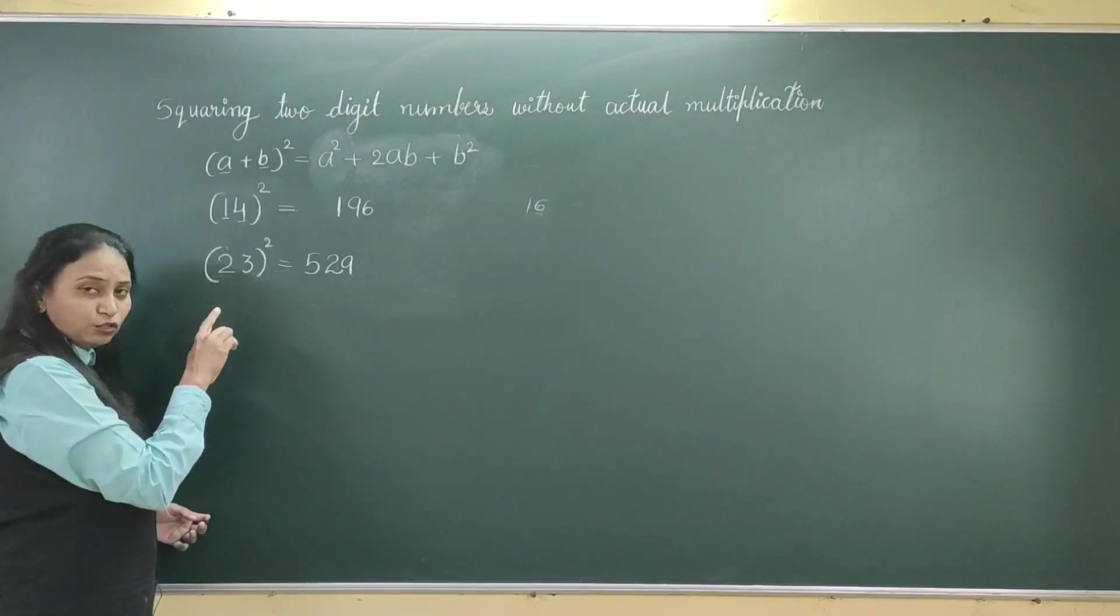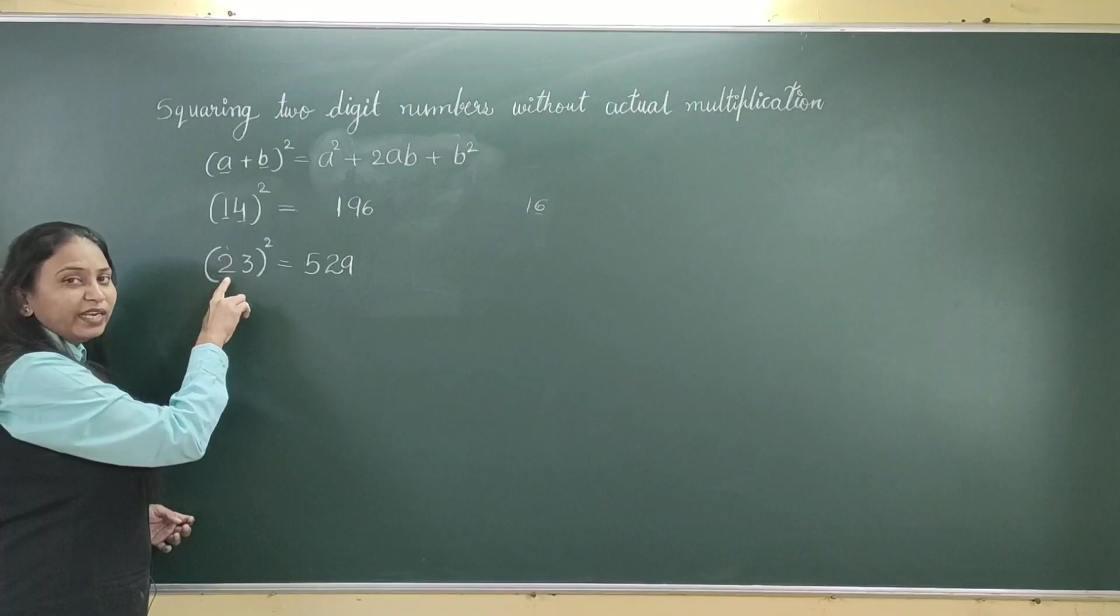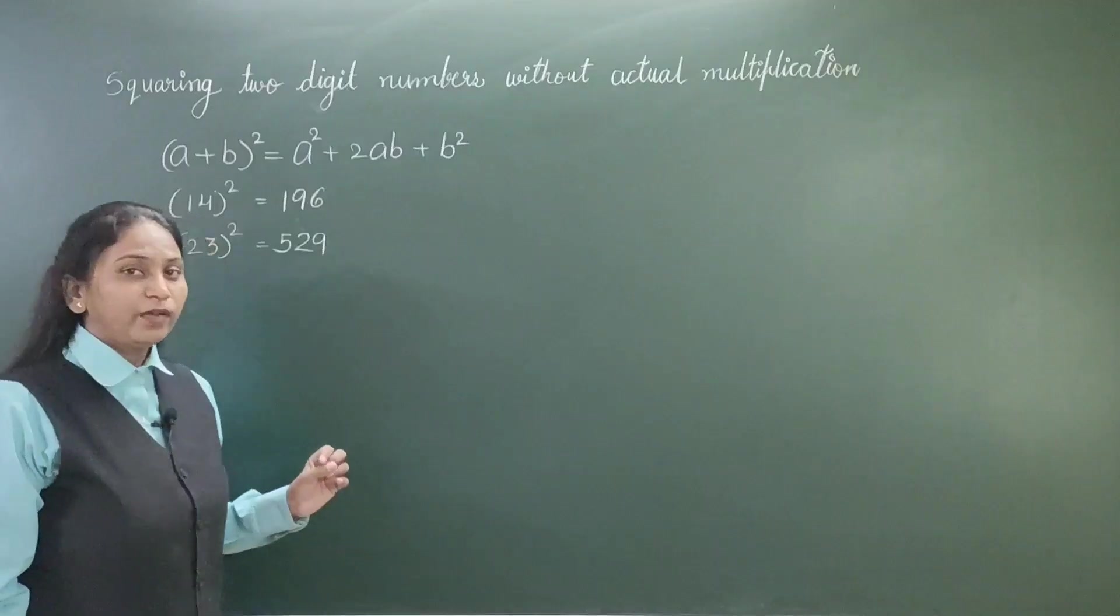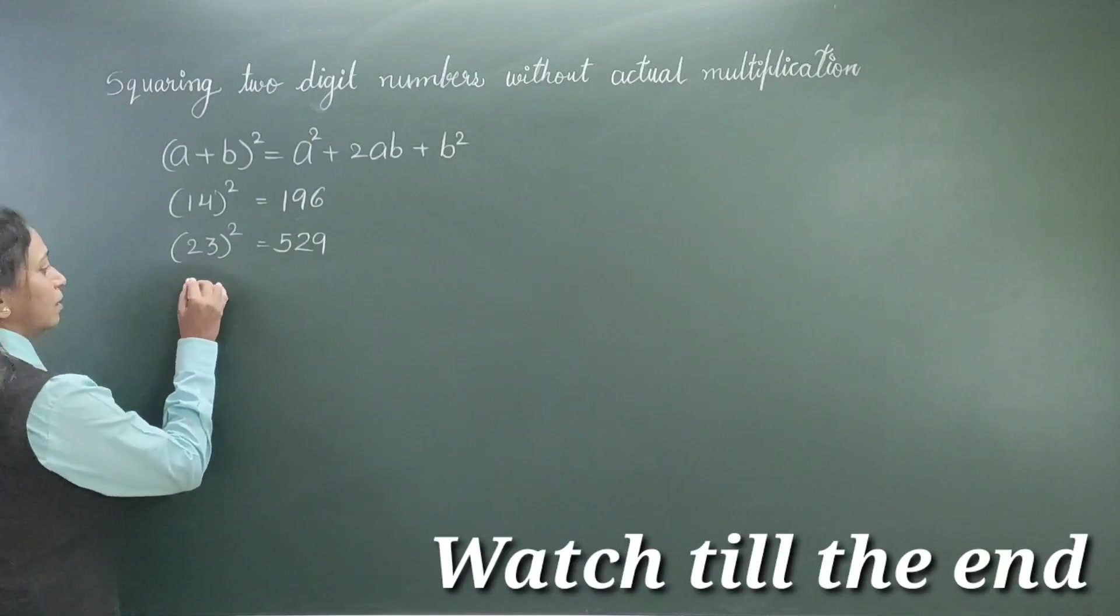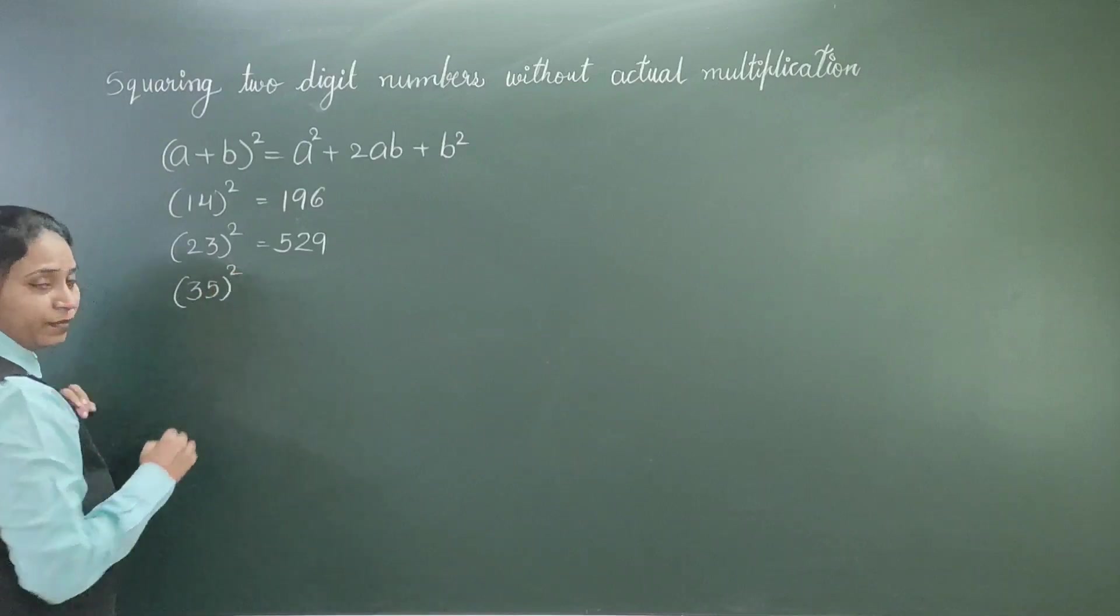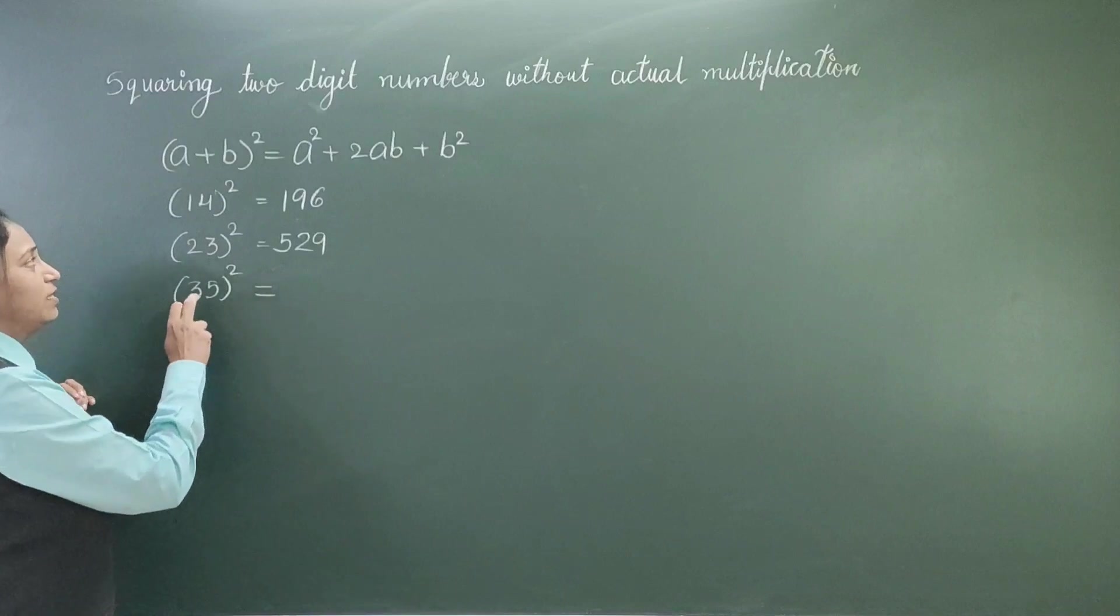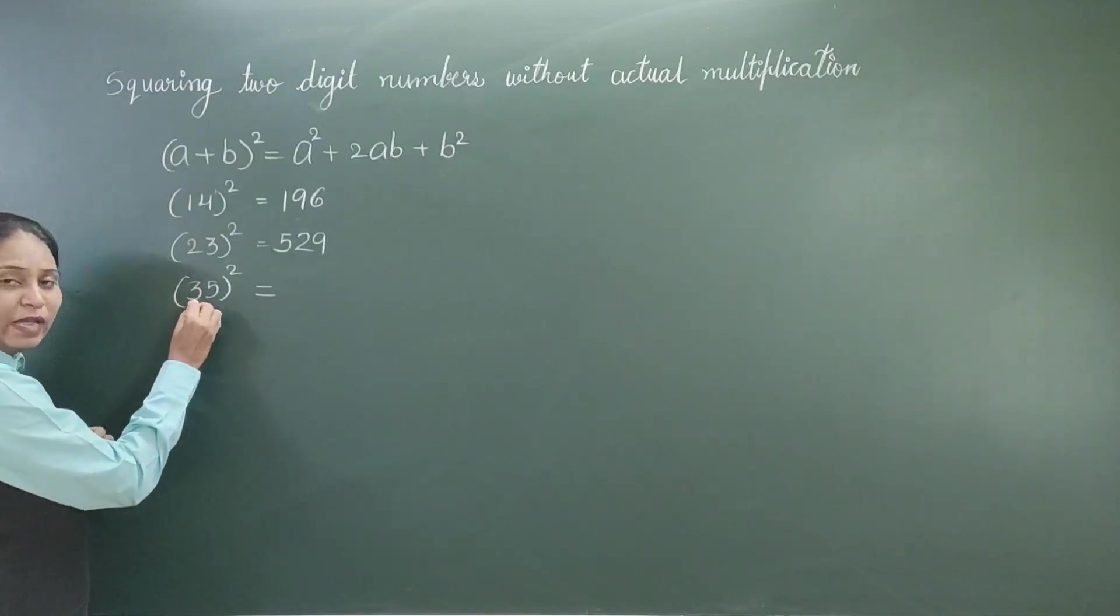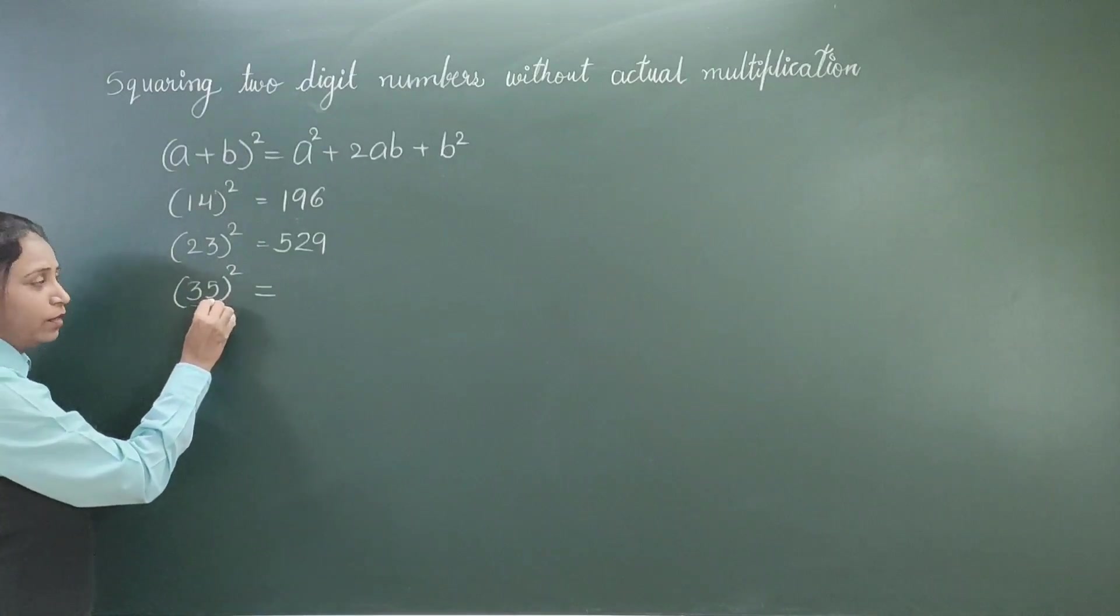Now, you can verify this also by doing actual multiplication of 23 with itself. One more example to understand this. Let us say 35². It is also very easy. Again, apply the same formula. Now, value of a is 3 and value of b is 5.